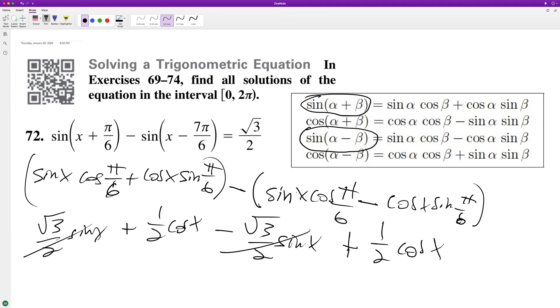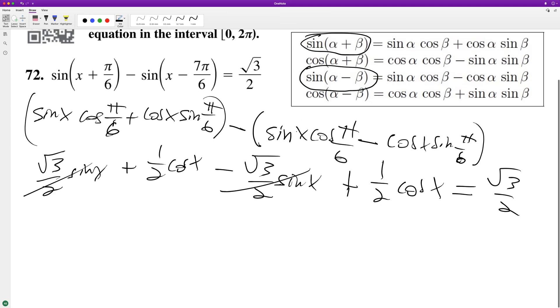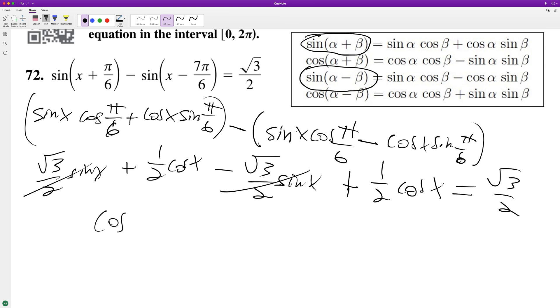Root 3 over 2 sine of x cancel out, and then we're left with just cosine of x is equal to root 3 over 2, because 1 half plus 1 half equals 1.